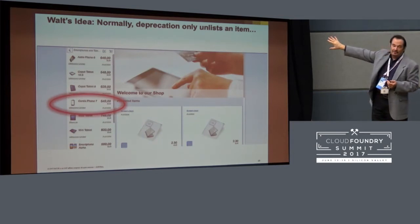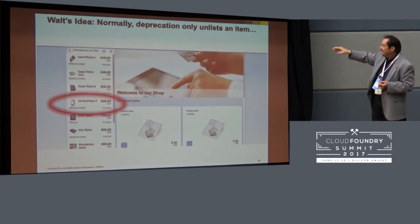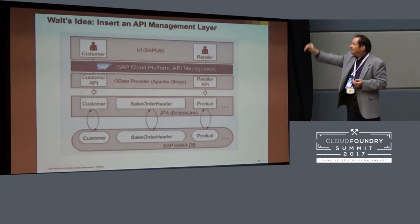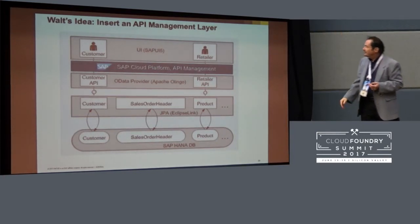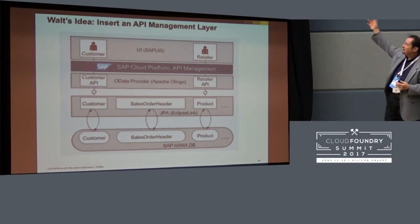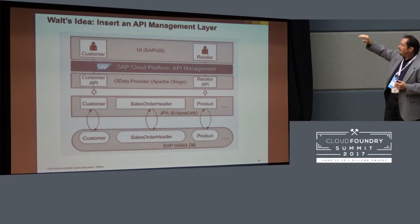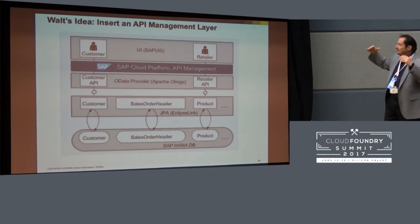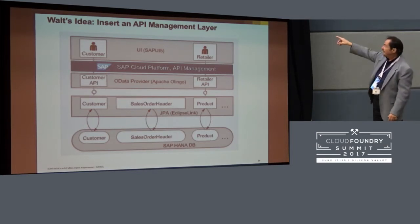Instead of just removing the deprecated phone from the list, he wants to insert API management in between the APIs that were exposed in the back end and that were consumed on the web. The API management layer makes these changes and layers them on top of the interface that already existed.